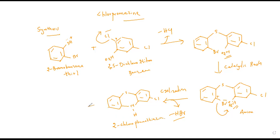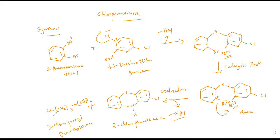2-chlorophenothiazine is now reacted with another compound: Cl-(CH2)3-N(CH3)2, which is called 3-chloropropyl-dimethylamine. After obtaining 2-chlorophenothiazine, reacting it with 3-chloropropyl-dimethylamine gives the final compound, chlorpromazine.